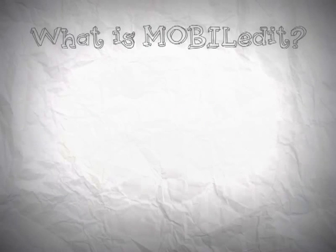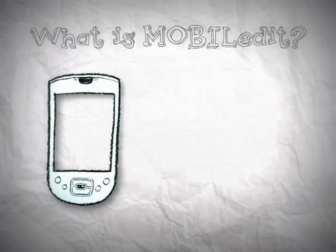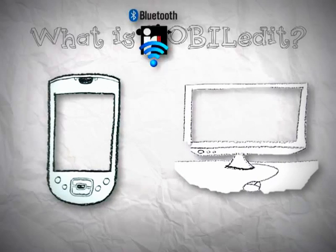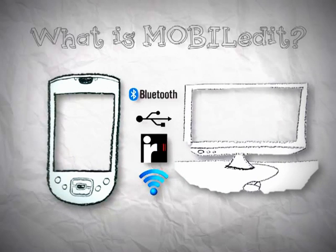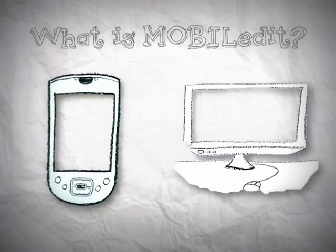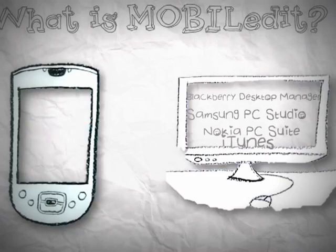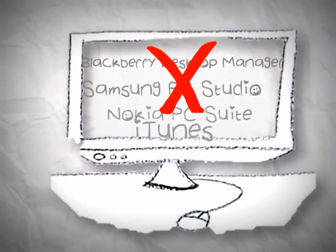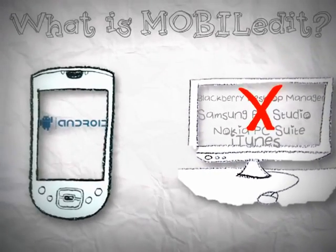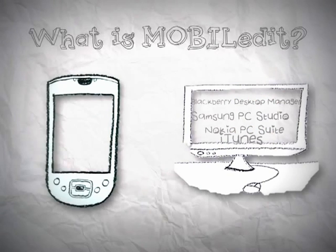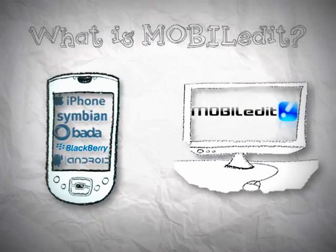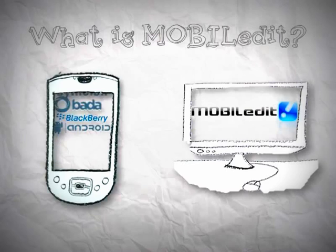Mobile Edit. What is it? Well, if you want to connect your phone to a PC, you have many different options available. The problem is that different phones require different tools for connection. Nokia handsets need Nokia PC Suite and so on. Android phones have nothing available. The last thing you want is a bunch of different tools on your PC. You probably have enough junk that you don't use on your computer already. You just need one tool. Mobile Edit.